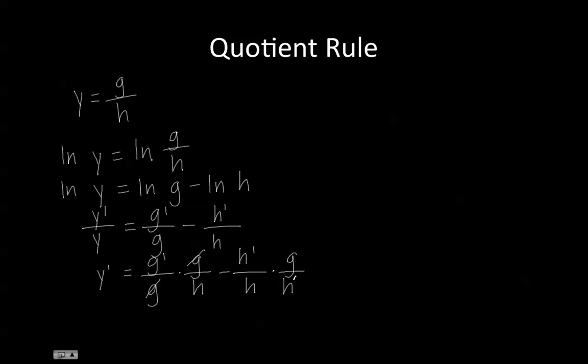The g's cancel out over here, but nothing cancels out on this side. So instead of having the difference of two fractions, we're going to put everything over a common denominator of h squared.